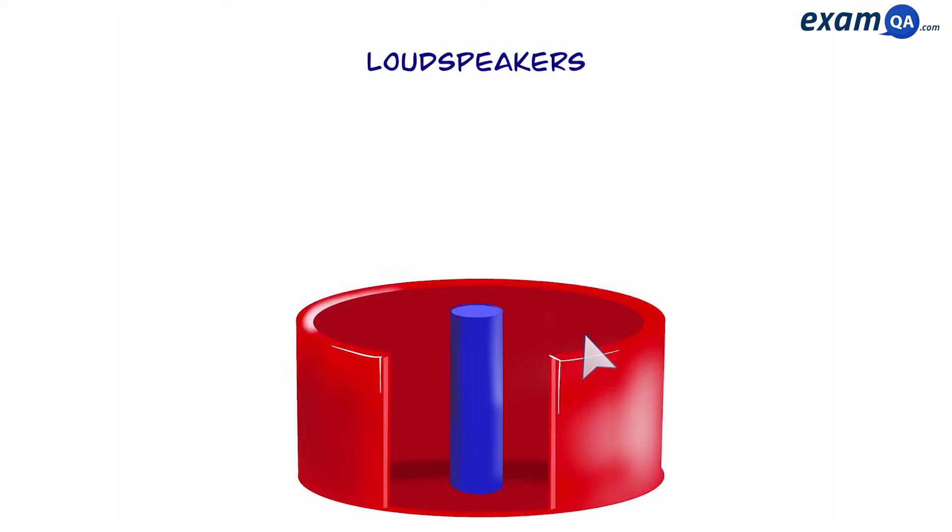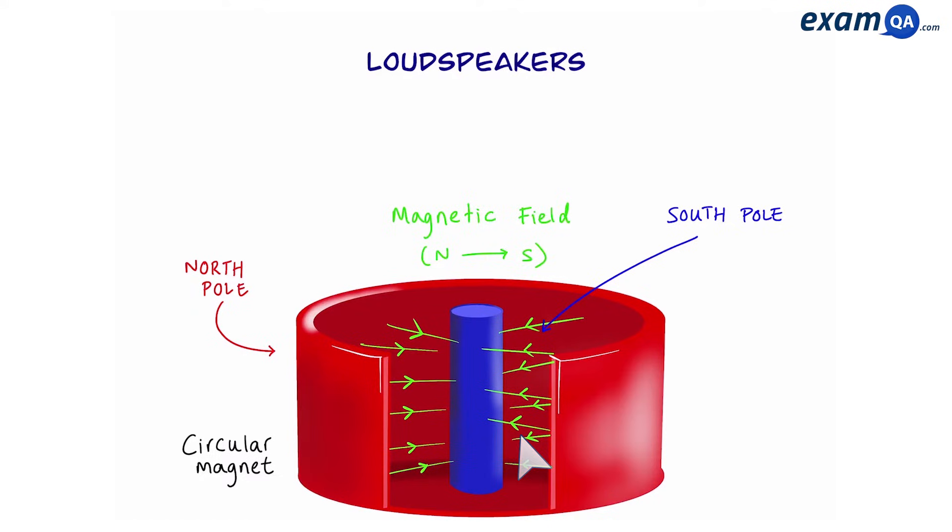So inside the loudspeaker we basically have a circular magnet which has a north pole and a south pole in the middle. Now we know that when you have a magnet that means there's also a magnetic field which always points from north to south.